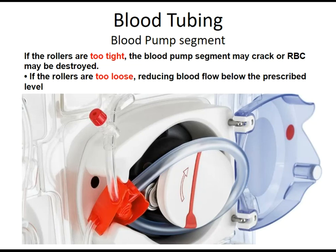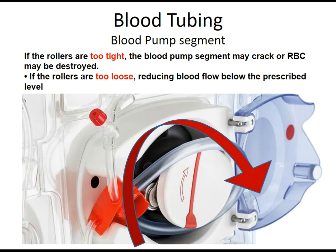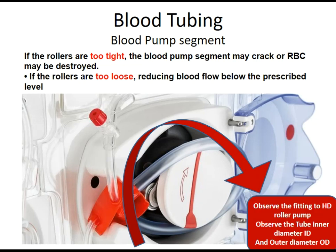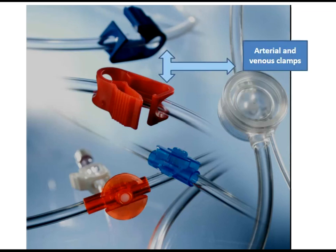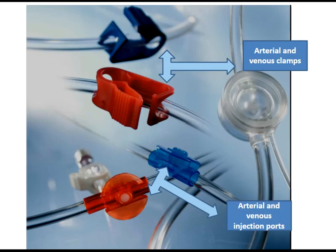If the rollers are too loose, blood flow is reduced below the prescribed level. To avoid fitting issues with the roller pump, observe both the tube inner diameter and tube outer diameter on the blood line itself and on the calibration of the hemodialysis machine. On the blood line, there are also arterial and venous clamps, and arterial and venous injection ports for injection of drugs, anticoagulation, and others.